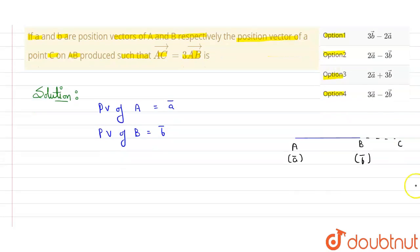It is given to us in the question that AC vector is equal to thrice of AB vector. So what is AC and AB vector? Suppose I need to find AB vector, so for finding AB vector I should subtract position vector of B minus position vector of A.